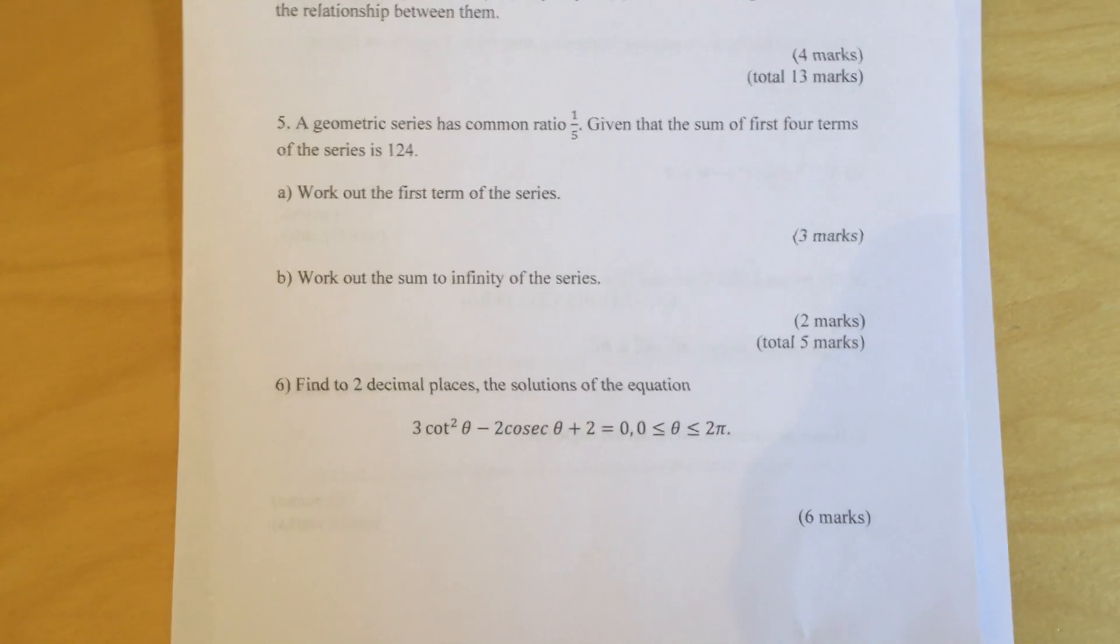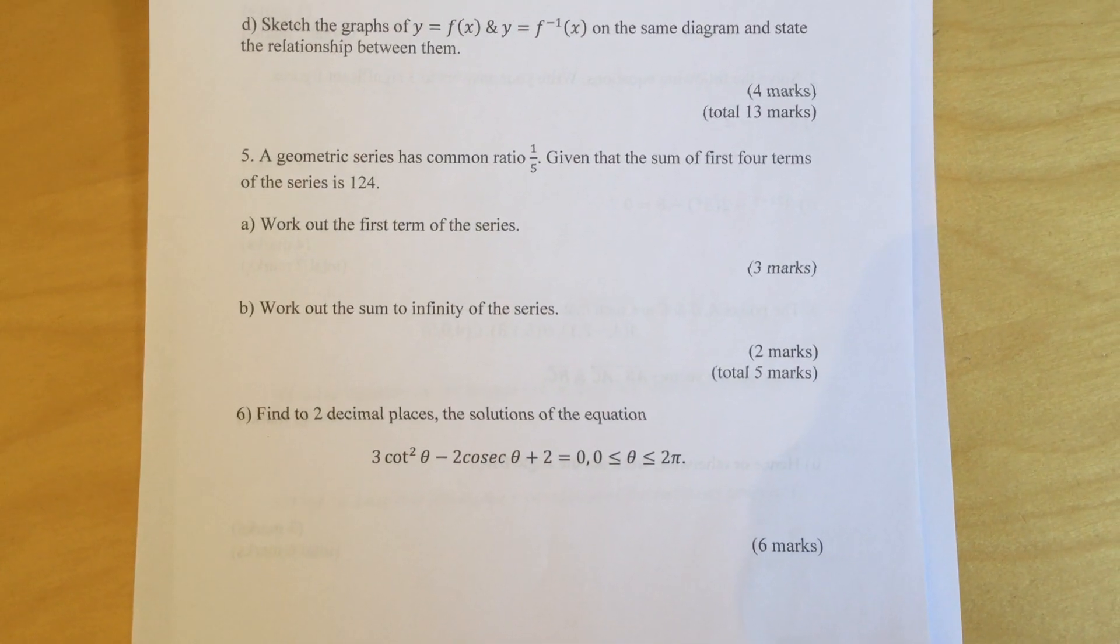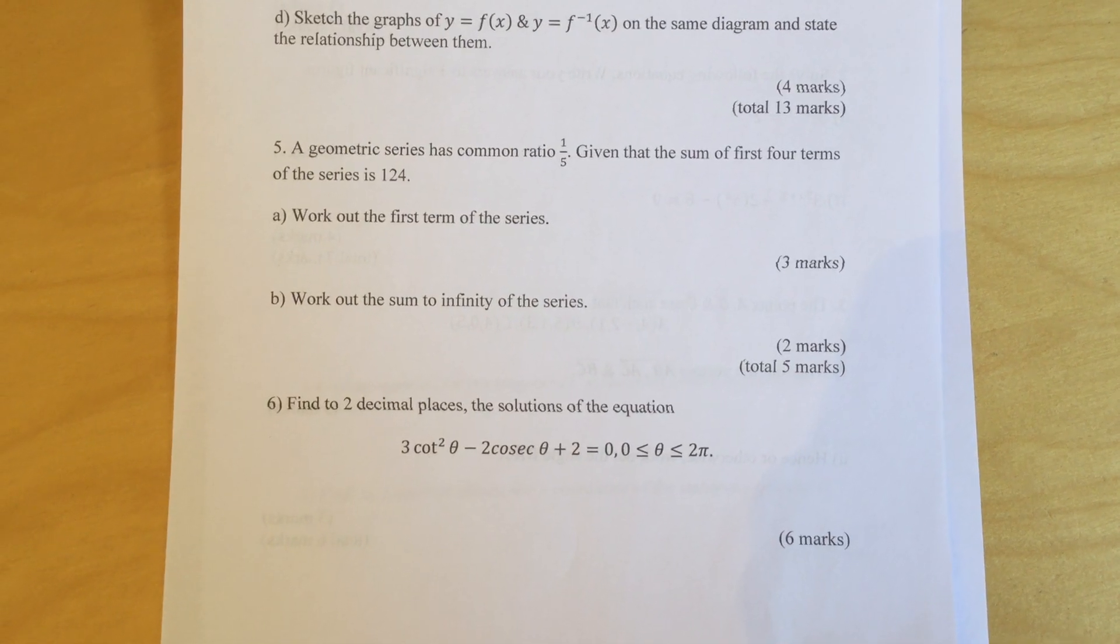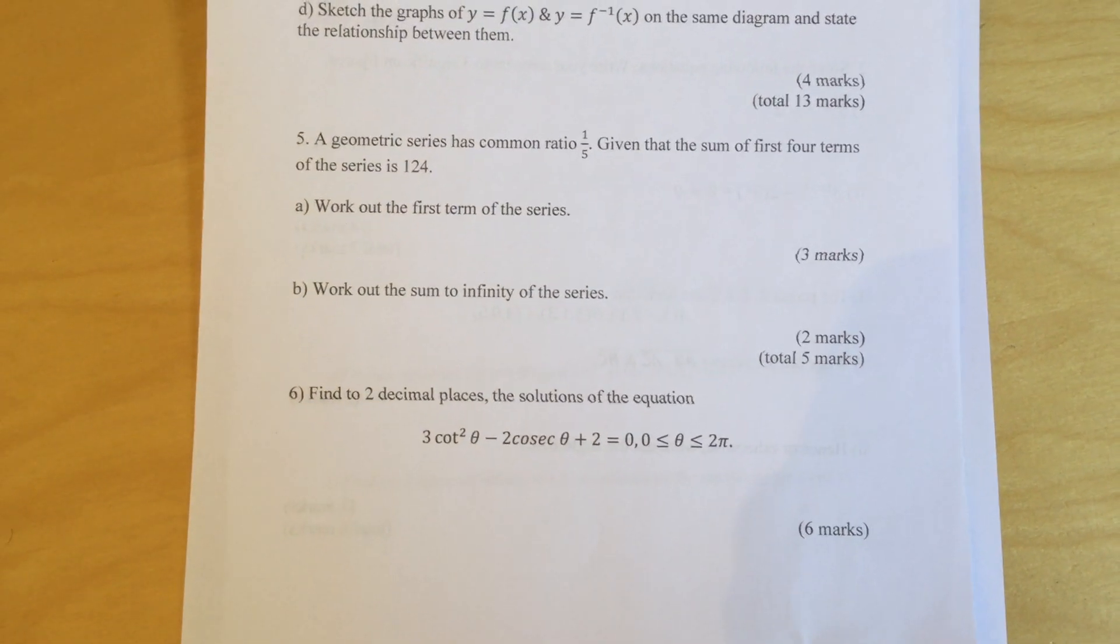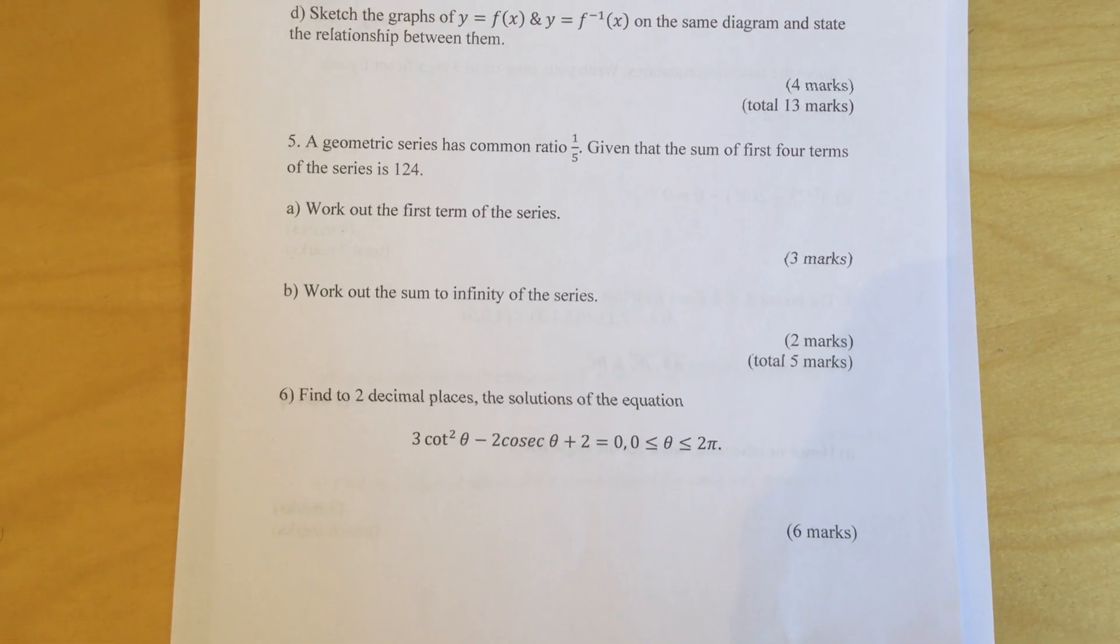Question 5: A geometric series has common ratio of 1/5. Given that the sum of the first four terms of the series is 124, work out the first term of the series. Part B: Work out the sum to infinity of the series.